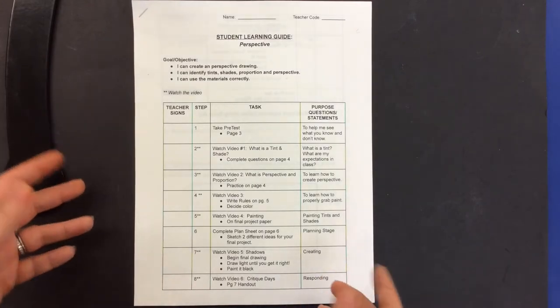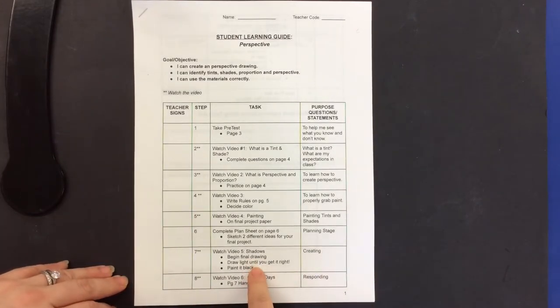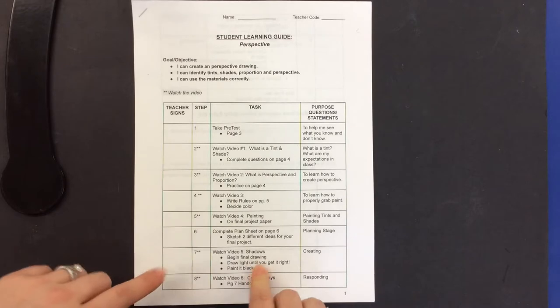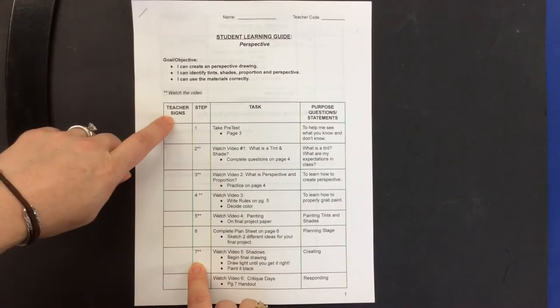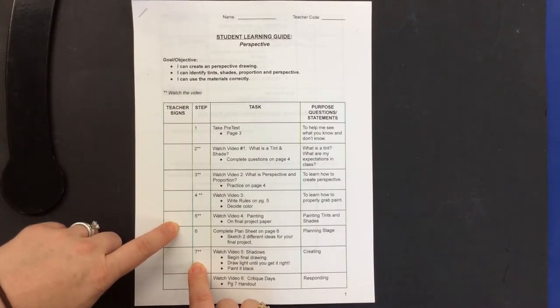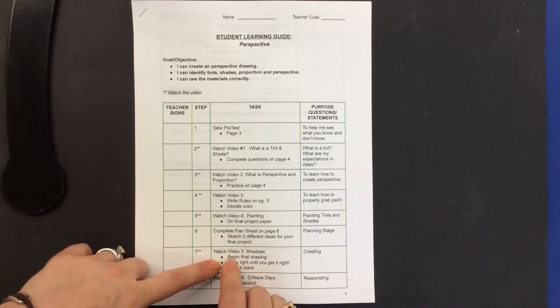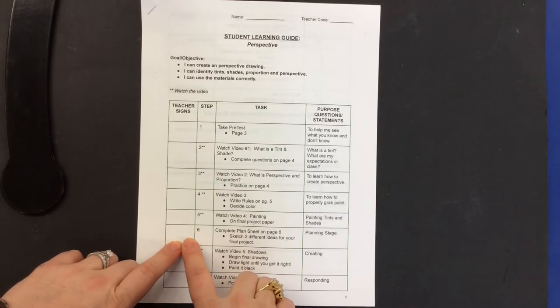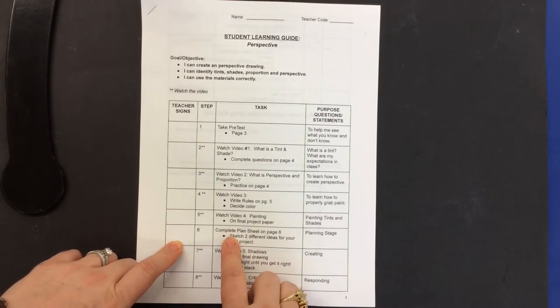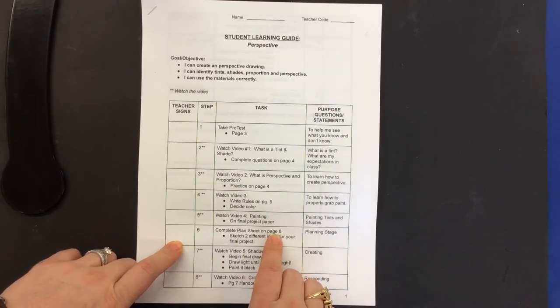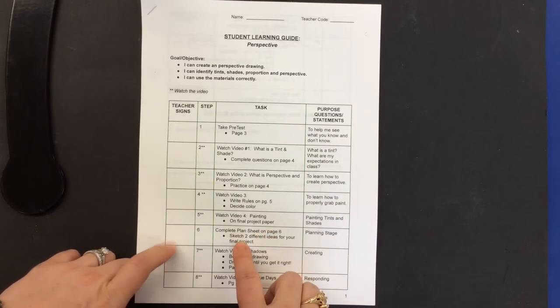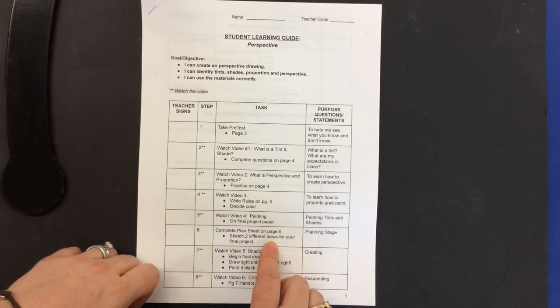All right, so right now you're on video 5, you're working on your shadows. As you can see, you've probably had everything here already checked off. If you haven't and you just skipped to go to video 5, make sure that you get step number 6 completed. Step number 6 is you complete the plan sheet on page 6, and I want you to sketch two different ideas for your final project.